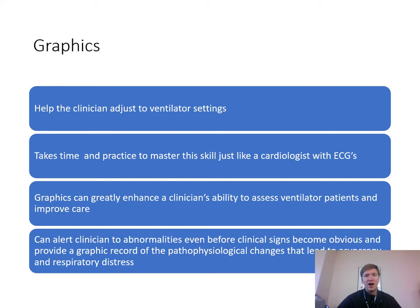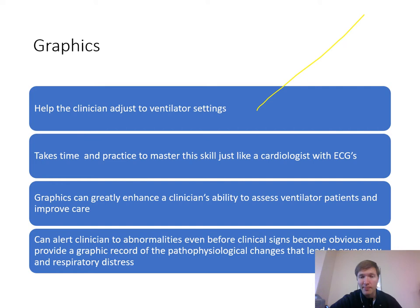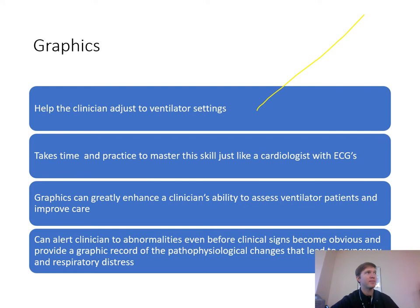Graphics help us adjust ventilator settings — we can see if there's over-distension, if tidal volume is too big, if there's patient effort, or if the ventilator is not giving them a breath when they're trying to inhale. They help us adjust sensitivity, inspiratory pause, rate, tidal volume, and so on. The ideal situation is to have perfect synchrony to reduce any risk of trauma, including the patient working against the machine, which could prolong their ICU stay.